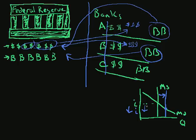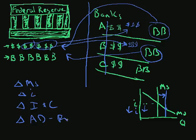Just what the Federal Reserve's policy is. So what have they done? They've changed the money supply, which changes the interest rate, which changes investment and consumption, which shifts the aggregate demand curve to the right. Because the money supply increased, the interest rate went down, which means investment and consumption go up, and the aggregate demand curve shifts to the right.